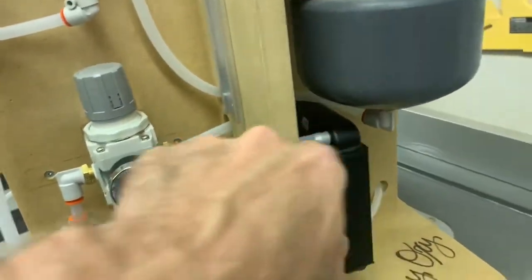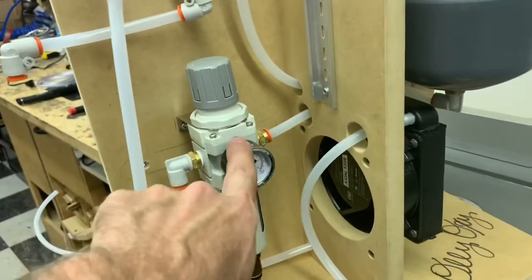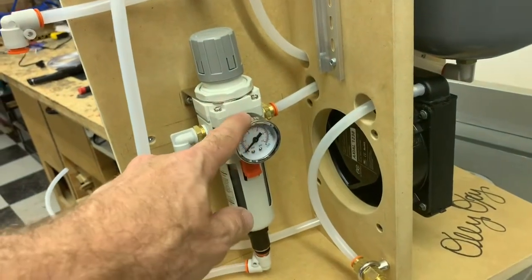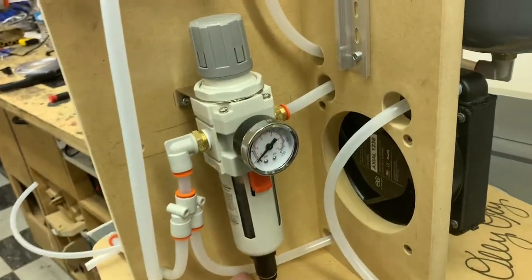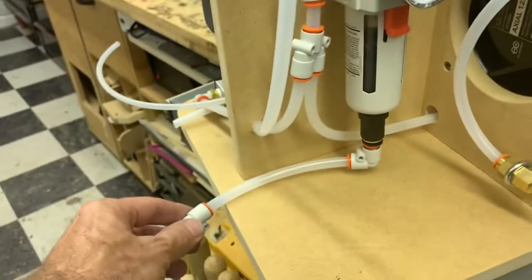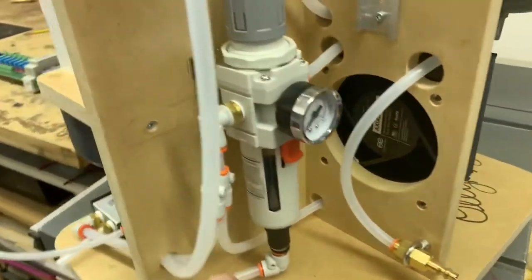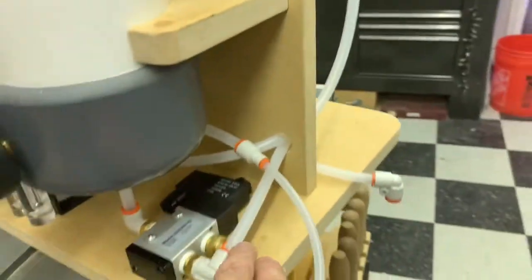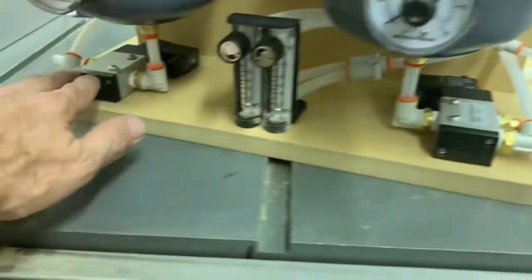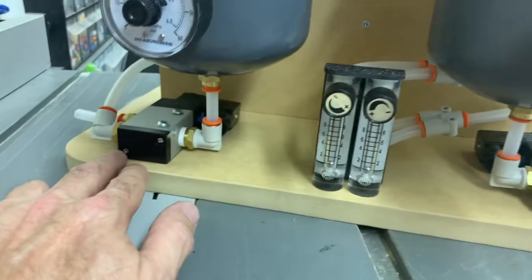Then we exit the radiator into a regulator. The regulator is a particulate filter as well as a moisture filter with automatic purging. So it'll purge any moisture that gets into the system out here automatically. Then these lines run out to the two feed valves, the right and left sieves, or sieve A and sieve B as we call them.